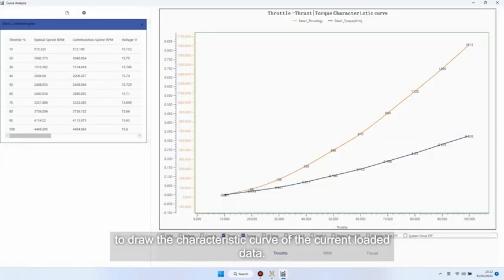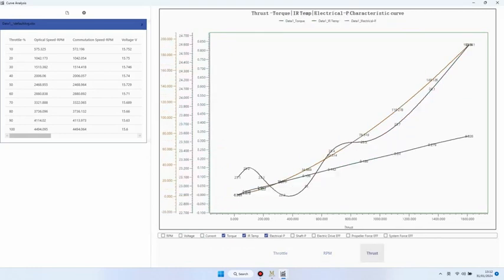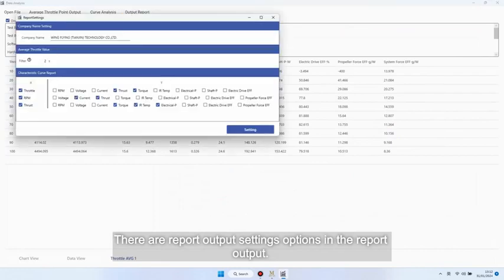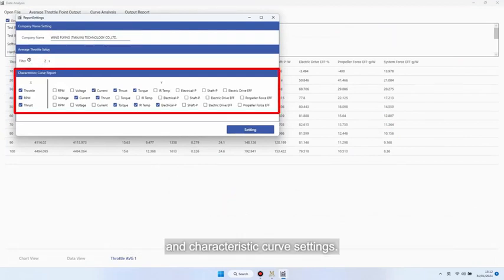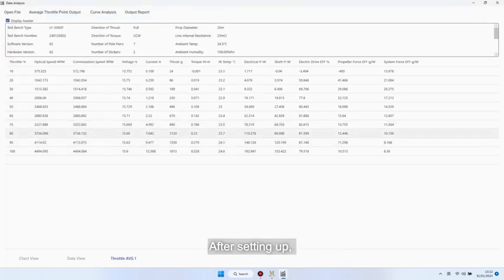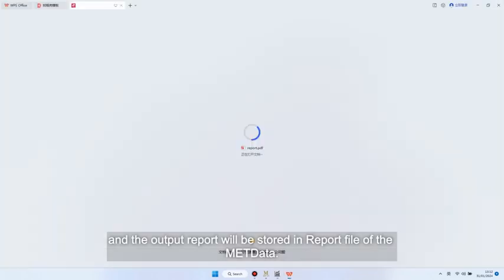Click curve analysis to draw the characteristic curve of the current loaded data. There are report output settings options in the report output. Users can choose to input the company name, filter settings, and characteristic curve settings. After setting up, click on report output and the output report will be stored in report file of the metadata.